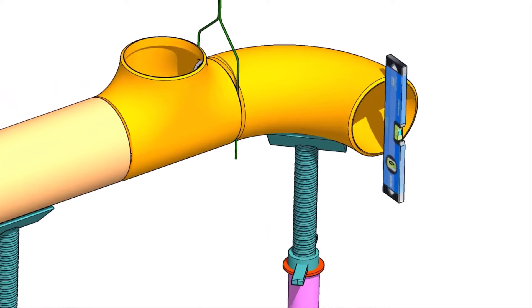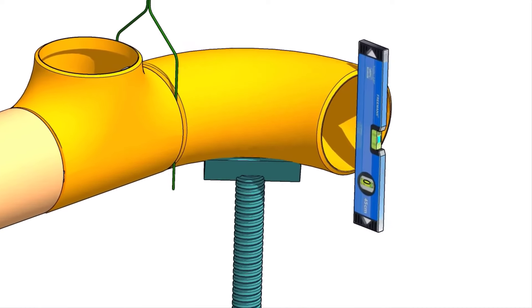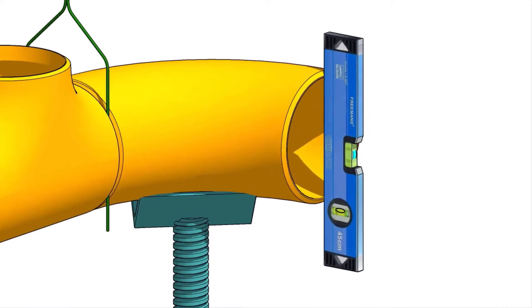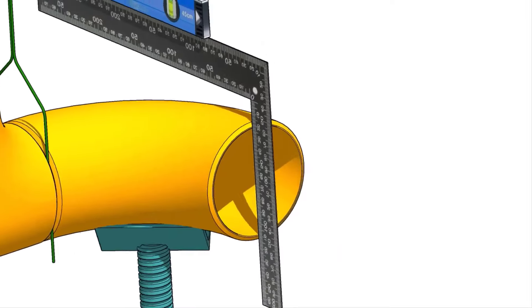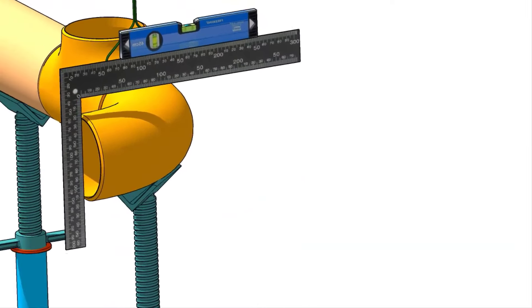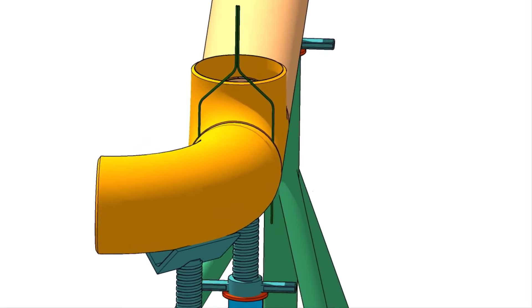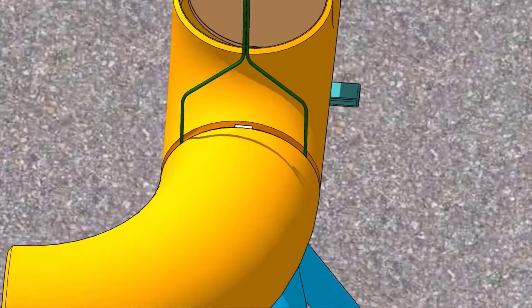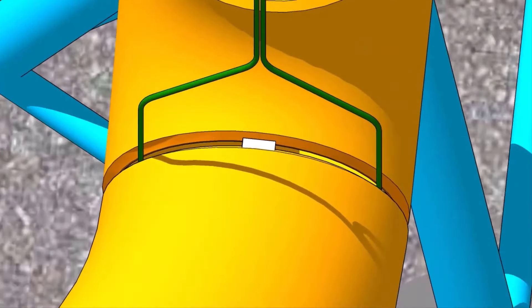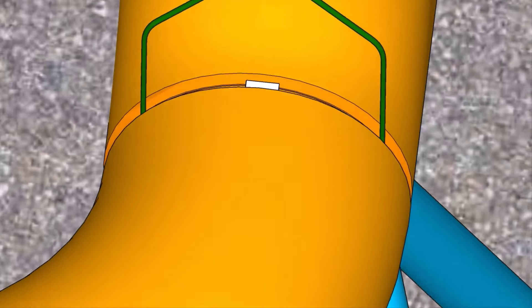You can maintain the level of the elbow face like this, or like this method. Tack weld on the top and the bottom side of the joint.